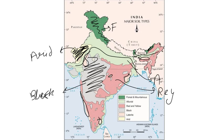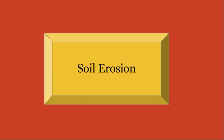Now as we learned about land degradation, similarly we will learn about soil erosion. Soil erosion refers to when soil becomes infertile and is removed.